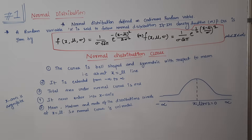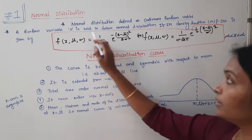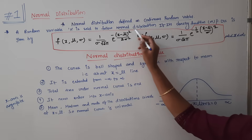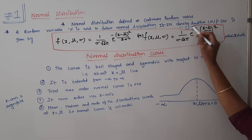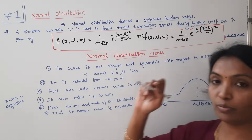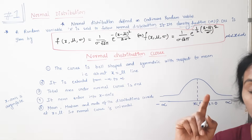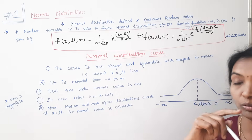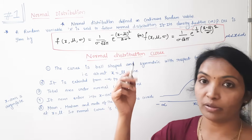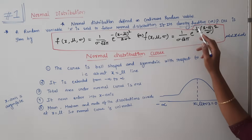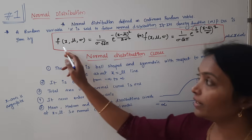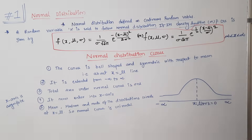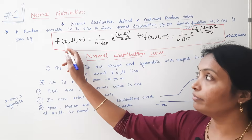If we consider a random variable X that follows a normal distribution, it satisfies the normal distribution condition. For a continuous random variable, we use a density function — also called the probability density function. For discrete distributions, we use the mass function.